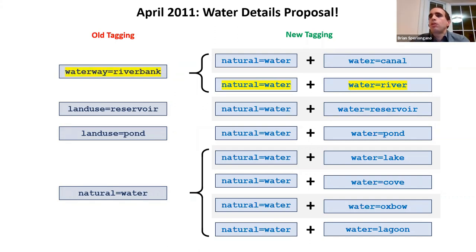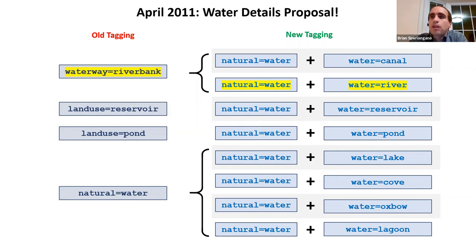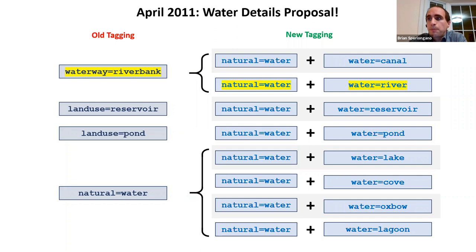So waterway=riverbank is the old tag and water=river is the new tag. The proposal actually recommended dual tagging for a period of time to allow data consumers and renderers time to catch up. Today, ten years later, all serious renderers support both schemes.